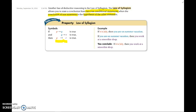An example: if it's July, then you're on summer vacation. If you're on summer vacation, then you work at a smoothie shop. So here are our two conditionals. Our first one is: if it is July, then you're on summer vacation. The next one is: if you're on summer vacation, then you work at a smoothie shop.